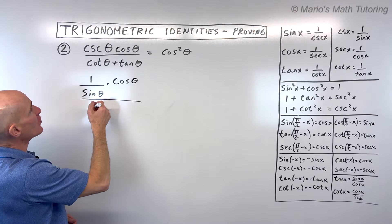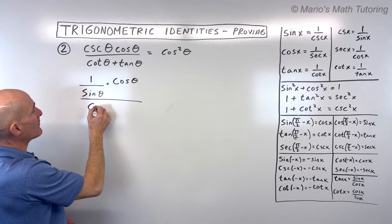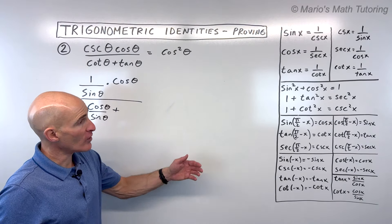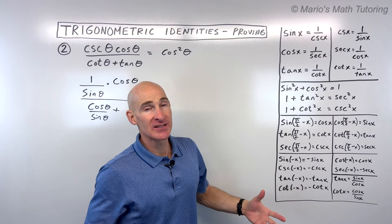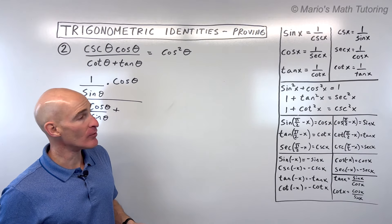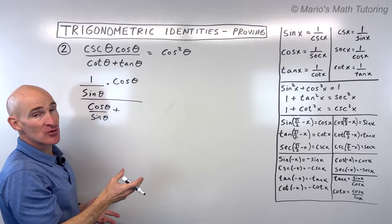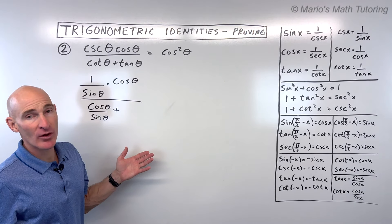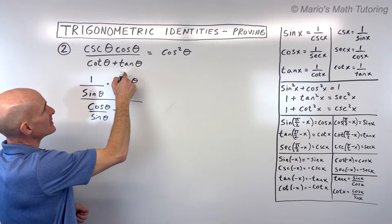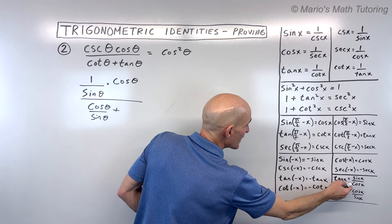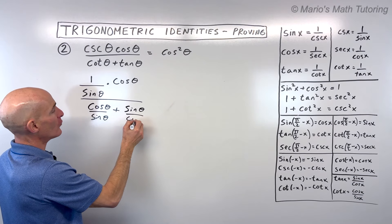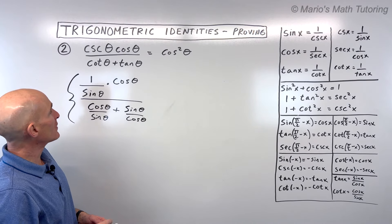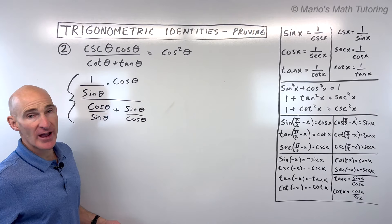Now I want to combine these into one fraction in the numerator and one in the denominator. The fraction bar is like a division sign — dividing by a fraction is like multiplying by the reciprocal, or 'keep it, change it, flip it.' For the common denominator, I need to multiply by both sine and cosine. Whatever I do to the denominator I have to do to the numerator, because that's like multiplying by 1. This gives us cosine theta over sine theta in the numerator, and cosine squared theta plus sine squared theta over sine theta times cosine theta in the denominator.